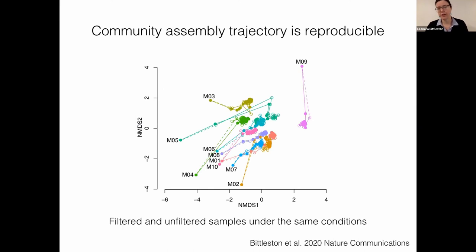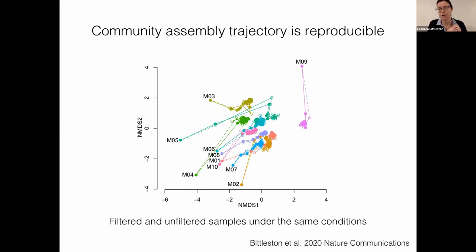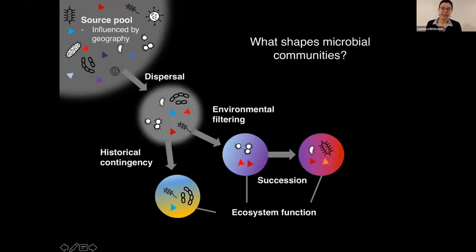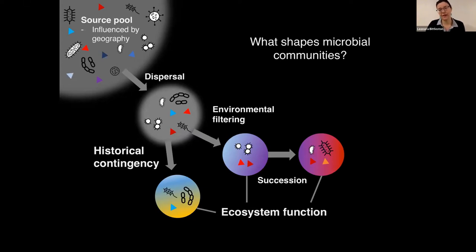The community assembly trajectory was also reproducible: filtered and unfiltered samples in the same conditions followed very similar trajectories by Bray-Curtis dissimilarity, suggesting that with enough information about community history, it may be possible to predict how communities change over time when placed in the same environment. In summary, historical contingencies play a role in determining community composition and can affect ecosystem function.